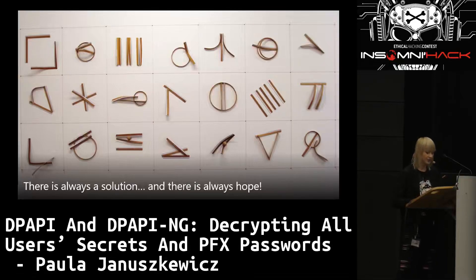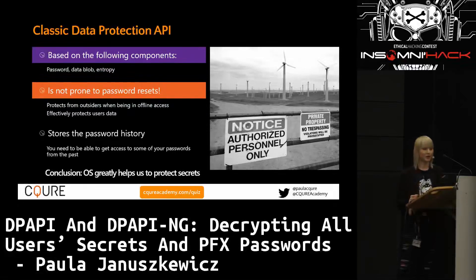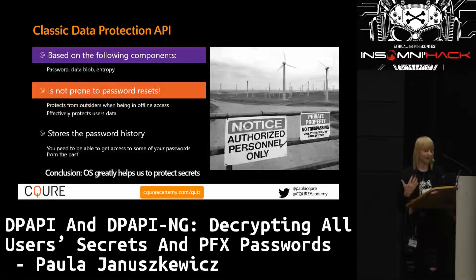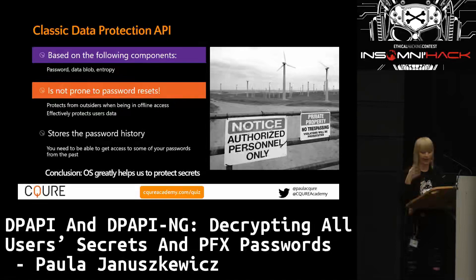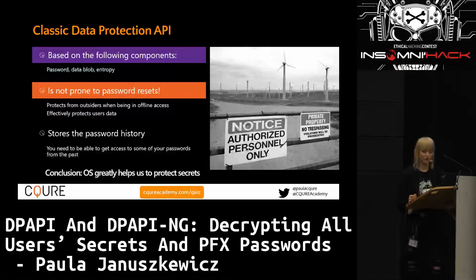Let me cover in detail what the Data Protection API is at the beginning, then we'll get into the technical part. Classic DPAPI, as we have it in Windows in basic form, is used as the crypto platform within Windows. Every time you encrypt data, it leverages three things: password, the data blob, and the entropy. Every time an application — whether Internet Explorer, Edge, Firefox, Chrome — is about to encrypt something and save it somewhere, that needs to happen in a certain way. You have two choices: code it yourself and save it your own way, or use the Windows way. The Windows way isn't that bad, but that's why we are here — to listen to the pros and cons.